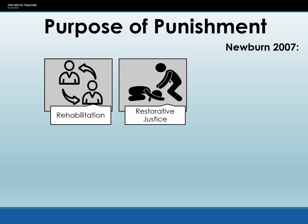Newburn also talks about restorative justice, which is about forcing criminals to make amends to the victims they have harmed. That might be time incarcerated, financial restitution, or an apology showing remorse for what they've done. It's about getting the criminal to understand that what they've done is wrong and try to make amends — to build bridges, if you like.